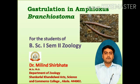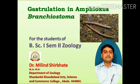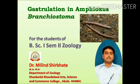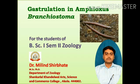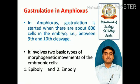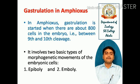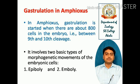Today we will discuss gastrulation in Amphioxus. Gastrulation starts when there are about 800 cells in the embryo, that is between the 9th and 10th cleavage.